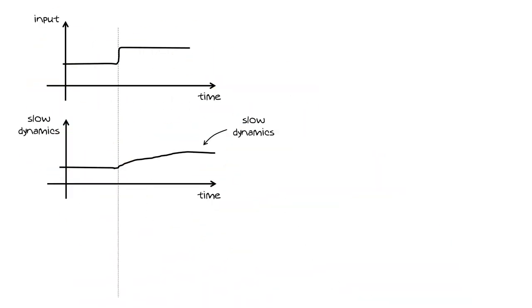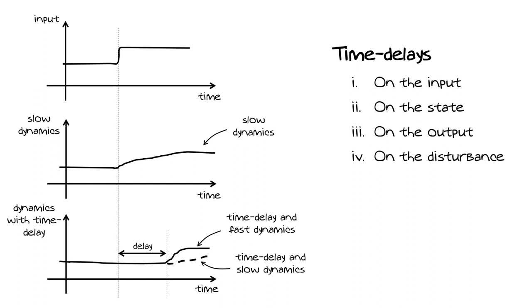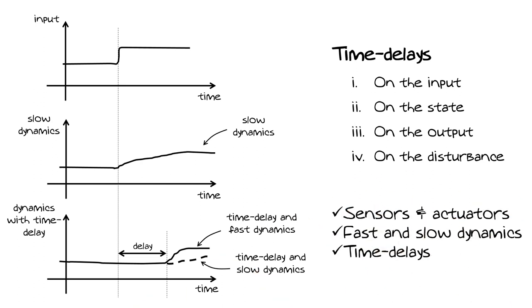People tend to mix slow dynamics and time delays, but they are very different. A quantity with slow dynamics changes immediately as soon as there is a change in input — it is just slow. But when you have a time delay, you will not see any change until some time has passed; only after a certain delay will your quantity start to change at a rate that depends on the system dynamics. Time delays can affect any of the four horsemen.